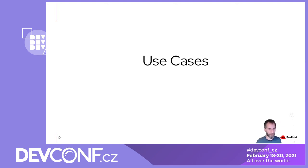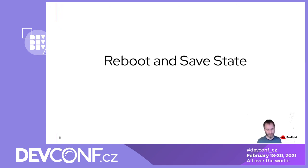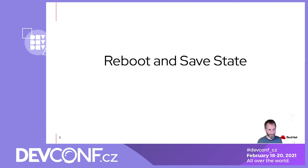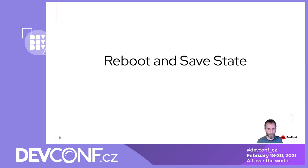Let's talk about possible use cases for container migration technology. The first use case — and the first thing I implemented in Podman, and am currently working on in Kubernetes — is reboot and save state. I have a container that is running, it's stateful: maybe it's a database with data loaded into memory, or an application that takes time to start up. You don't want to wait for it to initialize again, so you want to save the state before rebooting — for example, to install a new kernel for security updates.